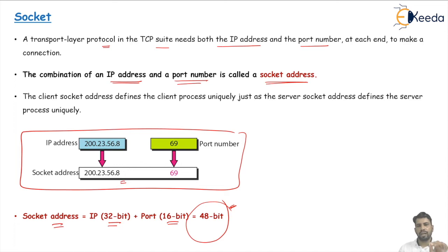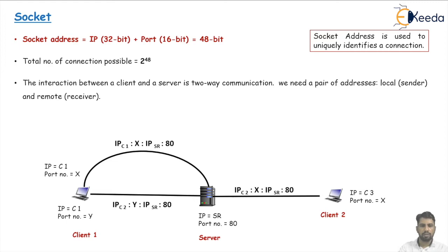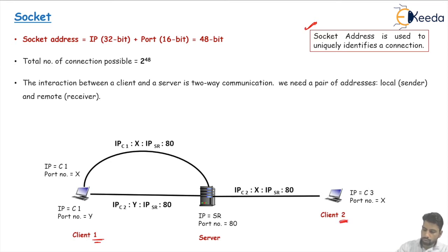Let's see this with a very nice example. The socket address defines the interaction between client and server. We need two different addresses: one is the local address — the sender address — and the other is the receiver address. Socket address mainly uniquely identifies a connection. Here we have client machine one, client machine two, and the server. Both client one and client two are communicating with this server.